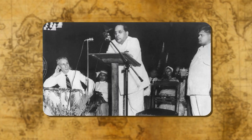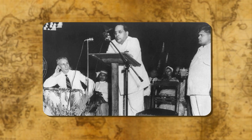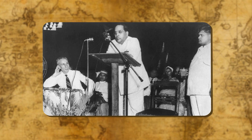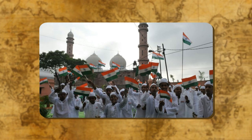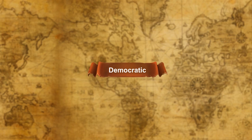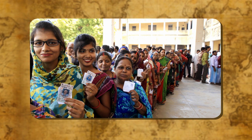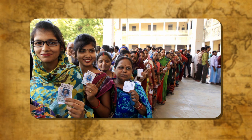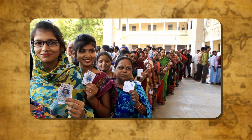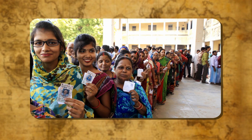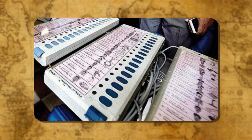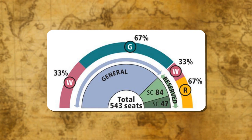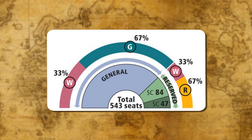Dr. Bhim Rao Ambedkar said: 'Secularism does not mean that we shall not take into consideration the religious sentiments of people. All that a secular state means is that Parliament shall not be competent to impose any particular religion on the rest of the people.' The government of India is elected democratically. Eligible voters may vote at the polling station in his or her constituency on presentation of the voter's identity card or other suitable identification. Use of electronic voting machines has simplified the process of voting and counting. 84 out of 545 seats in the Lok Sabha are reserved for various social groups and tribes.